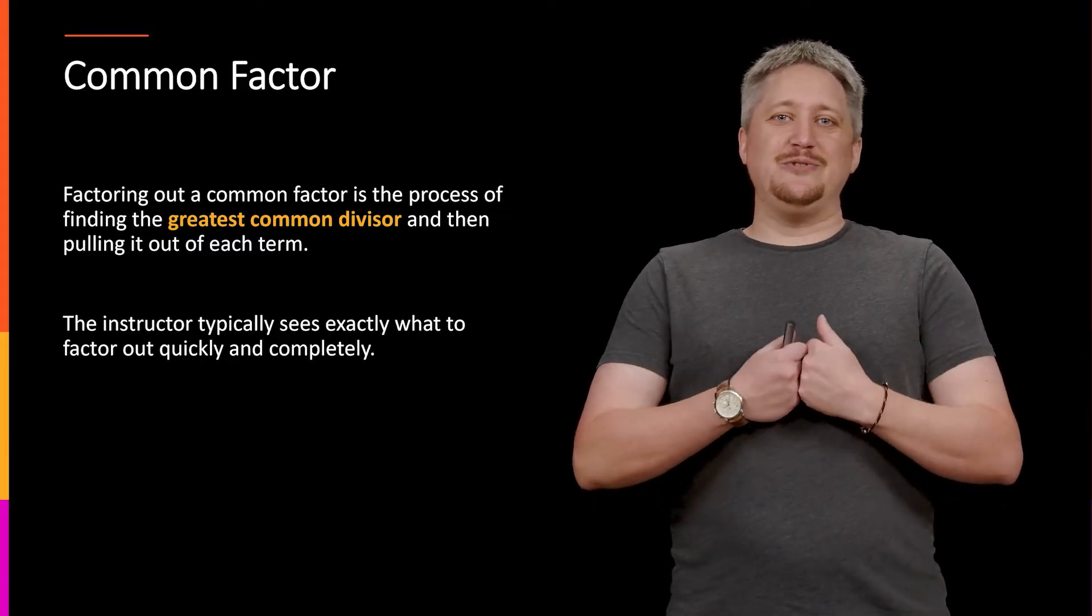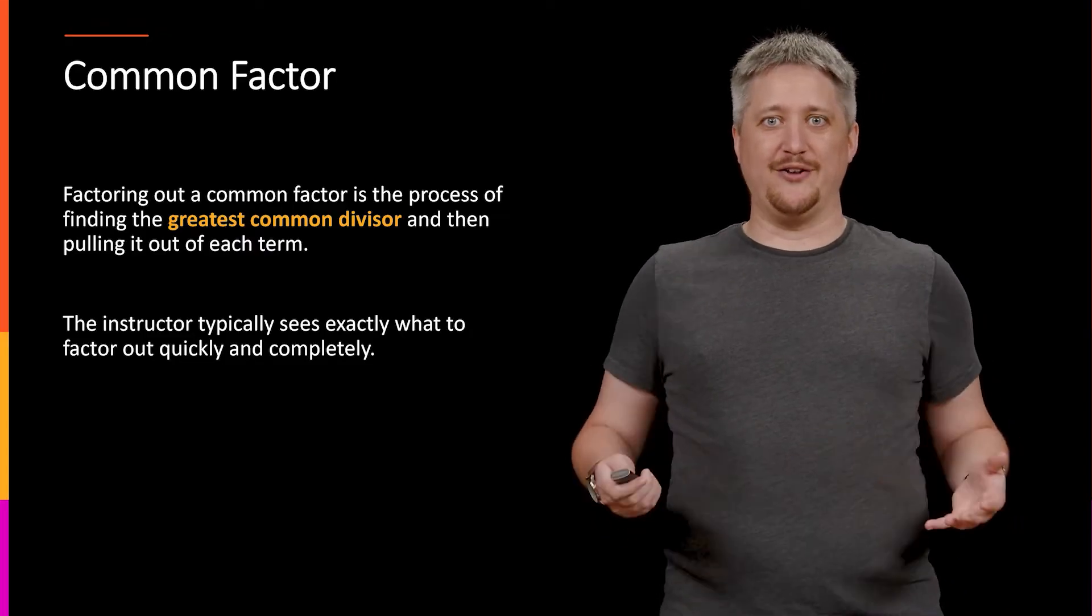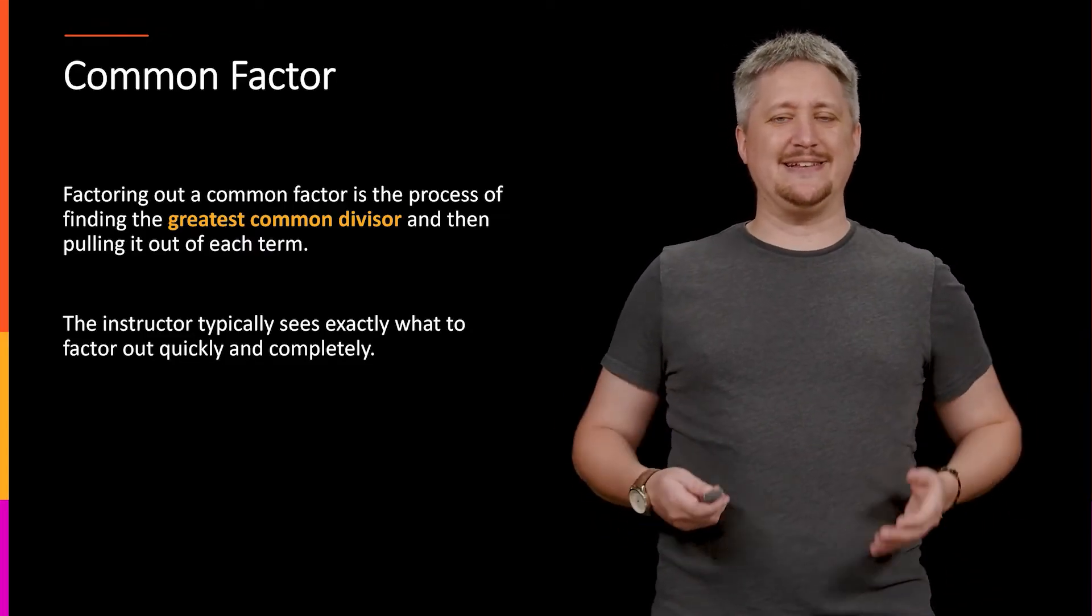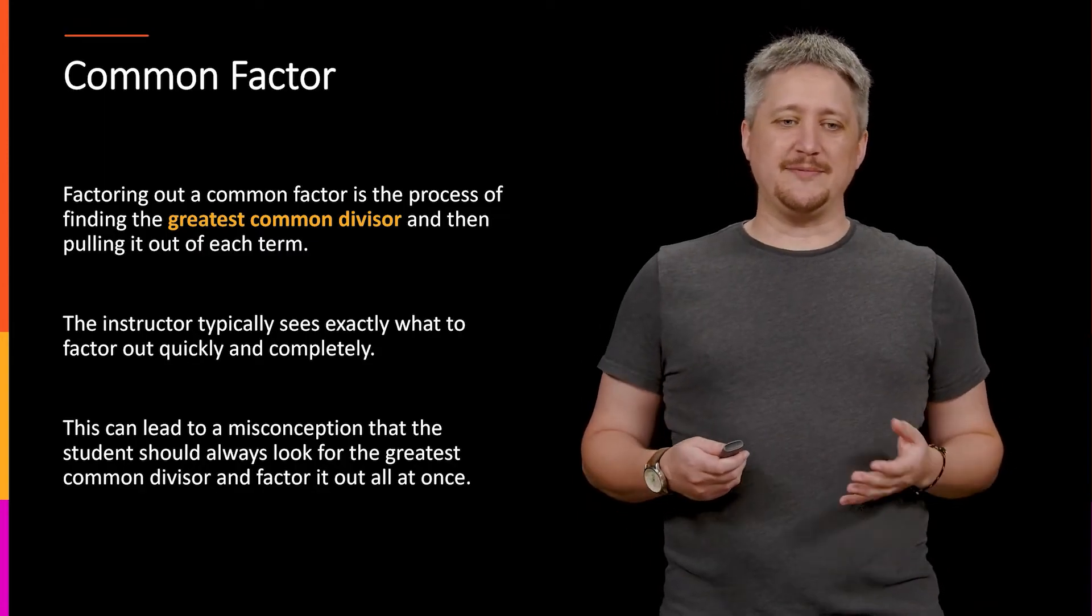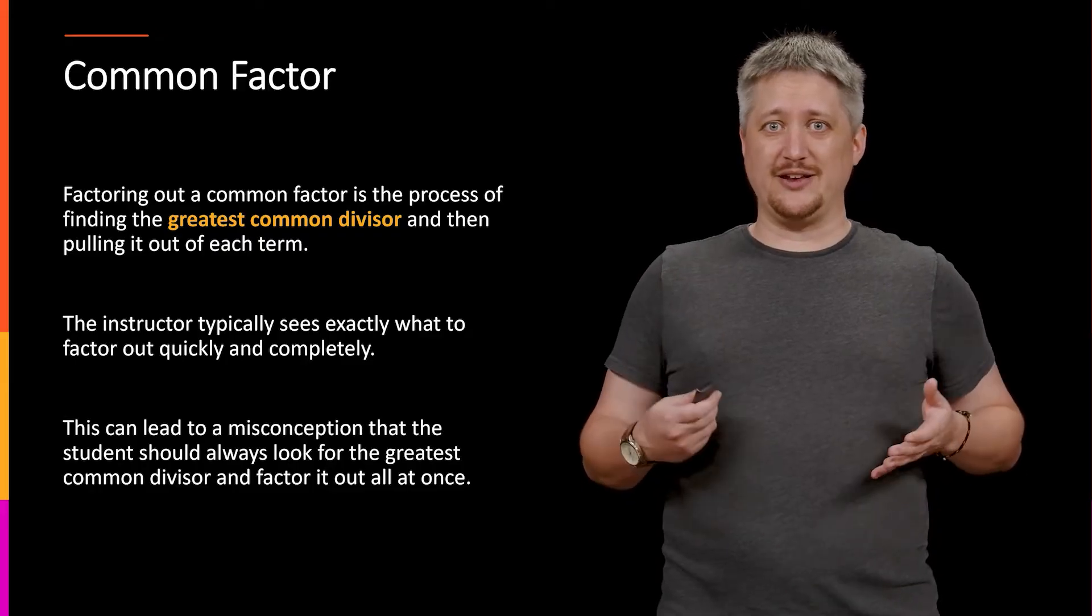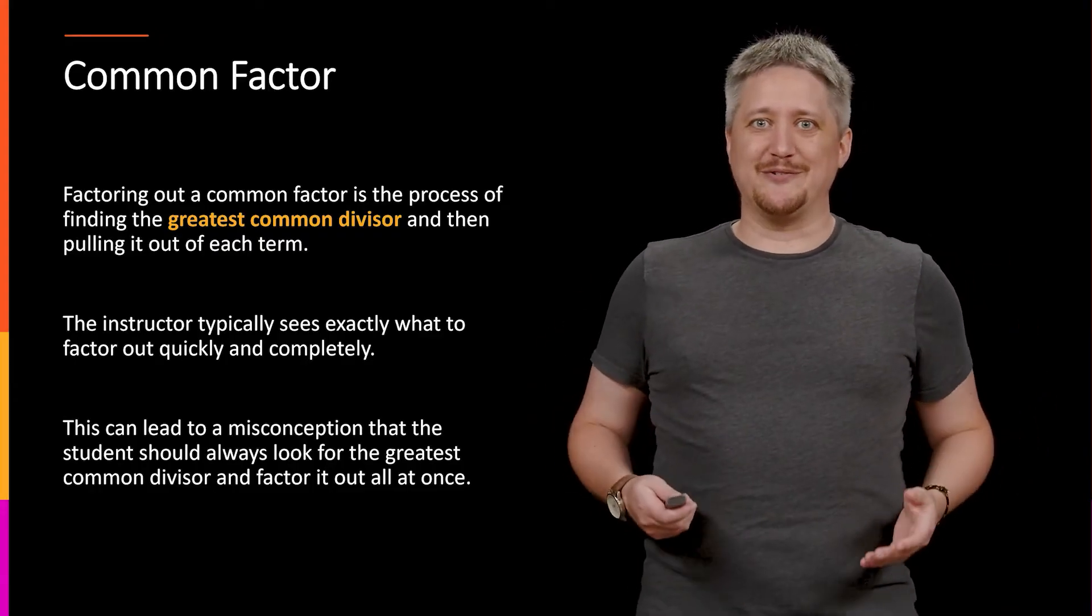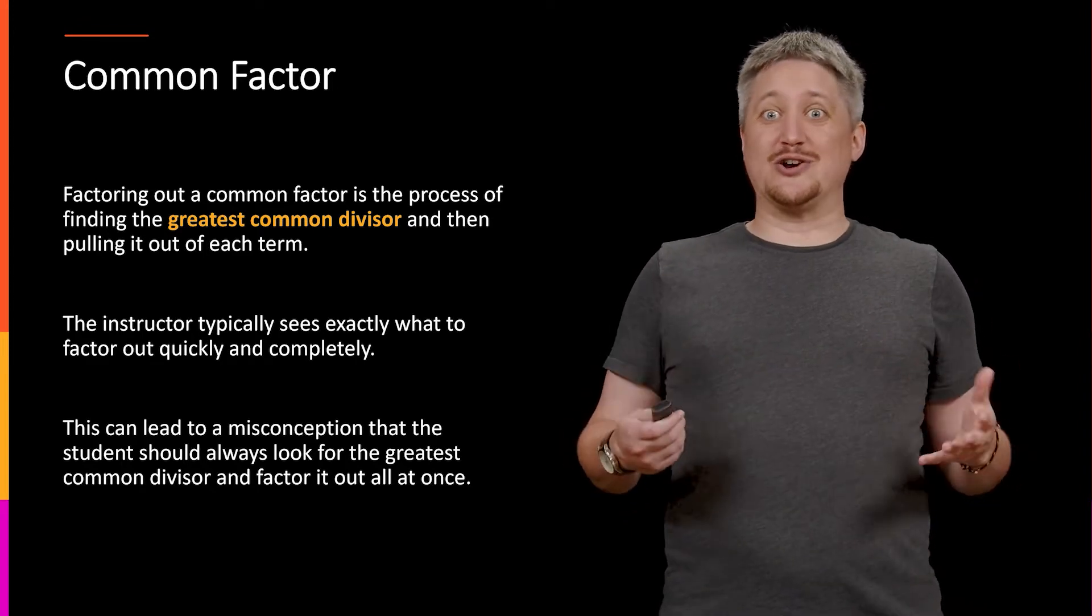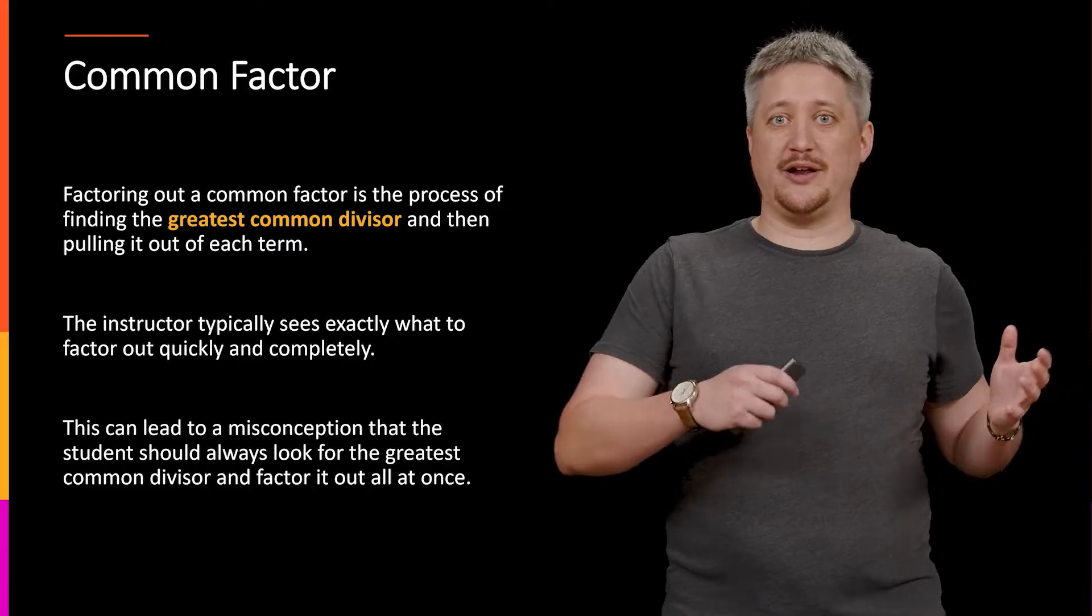So we do this all the time and as a result, just like anything else that people do that often, we get really good at it. Unfortunately this leads to a misconception that you, the student, first learning or first getting real practice with this should be able to do the same thing right. That the way to do it correctly quote-unquote is to find the greatest common divisor and factor it all out at once.